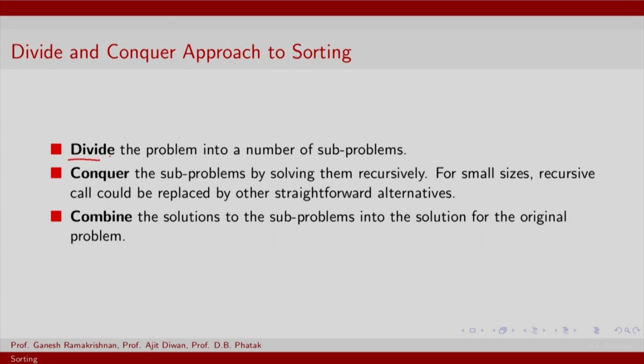The first phase is divide, which means divide the problem into a number of sub-problems. In the case of sorting, this will mean that you split the array S1 to Sn into two parts. The next step is conquer, which means be able to solve these two sub-parts, and this is often done by solving them recursively. So you will again split each of the parts into smaller parts and so on. Finally, having gone down all the way in your divide and conquer, you need to go back all the way up and combine. Combine is the path upwards combining the solutions to the sub-problems, and divide is a path downwards.